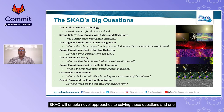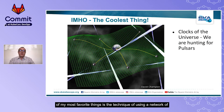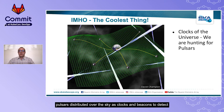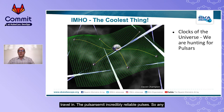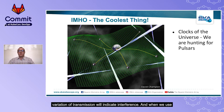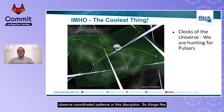The SKAO will enable novel approaches to solving these questions. One particularly exciting technique involves using a network of pulsars distributed over the sky as clocks and beacons to detect distortions in space and ascertain the directions that these things travel in. The pulsars emit incredibly reliable pulses, so any variation in transmission will indicate interference. When we use thousands of these sources spread over the sky, we will be able to observe coordinated patterns in this disruption — things like gravitational waves.